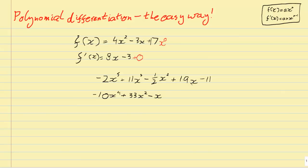Plus 1.9x, that just is a plus 1.9. And minus 11, we just get rid of that completely. And that becomes our answer there. And that is how to differentiate a polynomial the easy way.